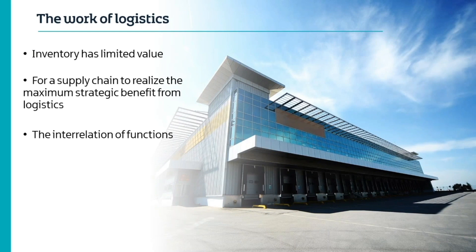In logistics, inventory is of limited value until it is positioned at the right time and right location to support ownership and the transfer of value creation. If a firm does not consistently satisfy time and location requirements, it has nothing to sell — that material needs to be available at the point of consumption when required, embodying the just-in-time principle. For a supply chain to realise maximum strategic benefit from logistics, the full range of functional work must be integrated, as decisions in one functional area will impact the cost of others.